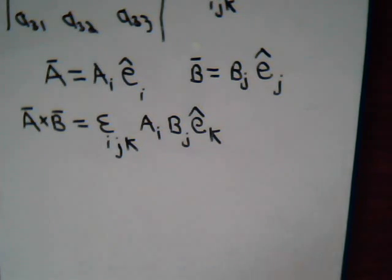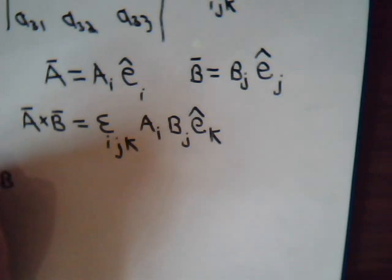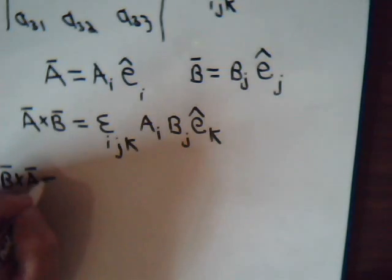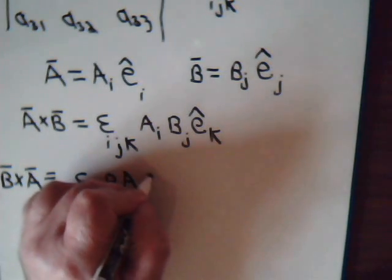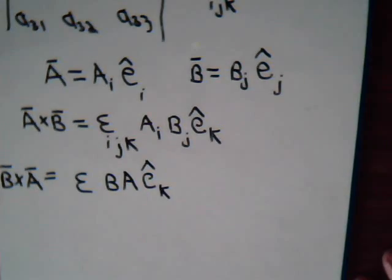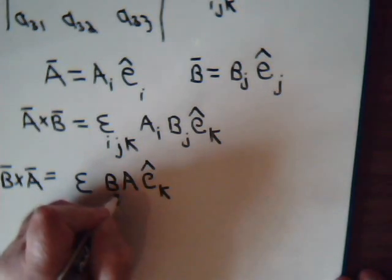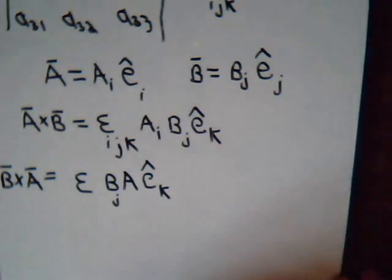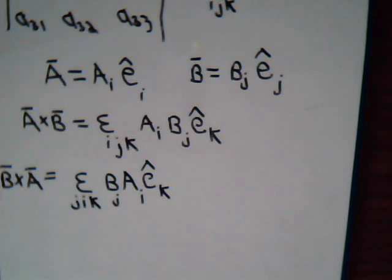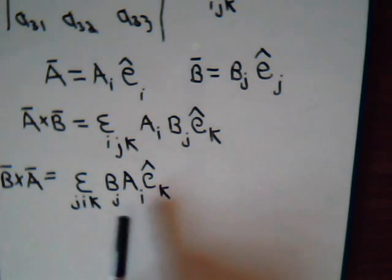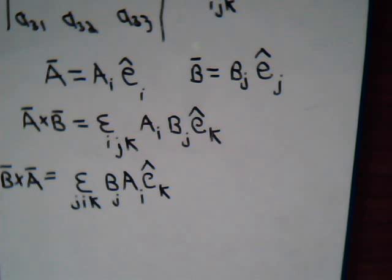But now let's think about what would this be then for B×A. And that will be equal to epsilon B, A... But B now we're having the index j, A has i. So this is j, i, k, so this has to be j, i, k. And indeed, that is how we'd express the cross product of B×A in component form using the epsilon permutation symbol.